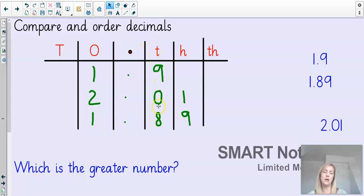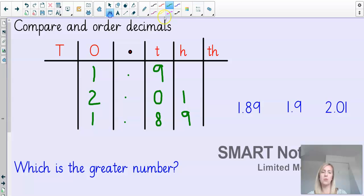So then we look into the tenths column. I've got a 9 and I've got an 8. So we could work backwards this time, actually, because we've already got our greatest number in. So let's put the next number that's going to go here. It's going to be our 1.9, which leaves our 1.89 to be the smallest number. 1.89, 1.9 and 2.01. So that means that our greatest number must be 2.01.